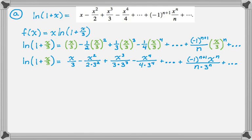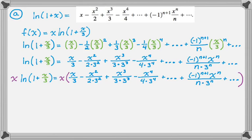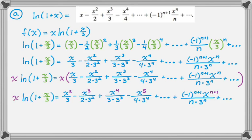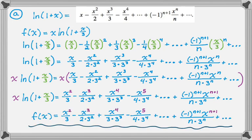Now I'm going to multiply by x, so x times natural log of one plus x over three is x times the entire series we just worked out. Distributing the x increases the exponent of everything by one — so instead of x over three you have x squared over three, instead of x squared over two times three squared you have x cubed, and so on. The nth term changes to negative one to the n plus one, times x to the n plus one, over n times three to the n. That's f(x).